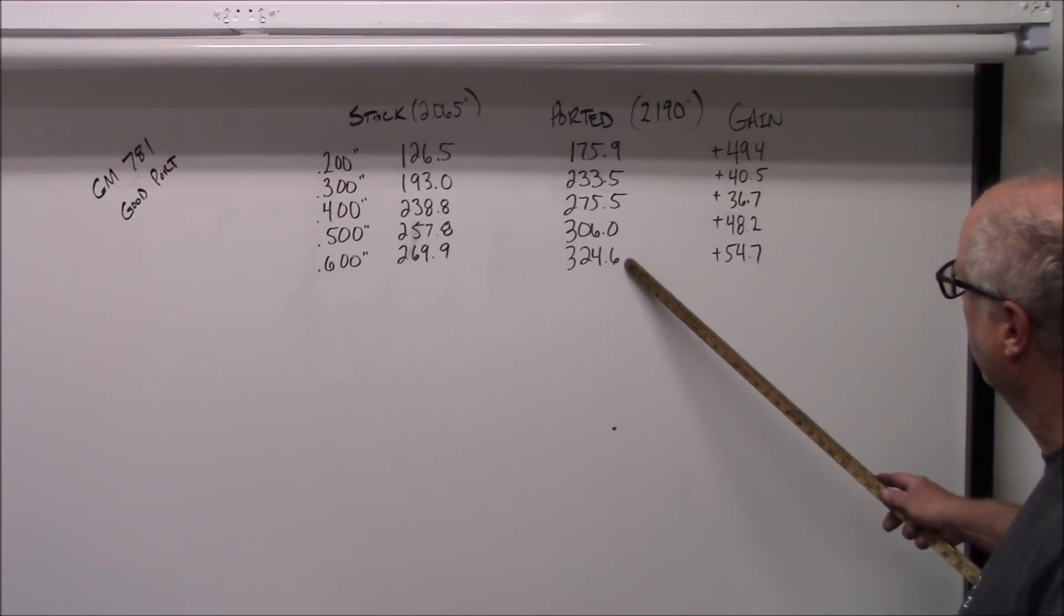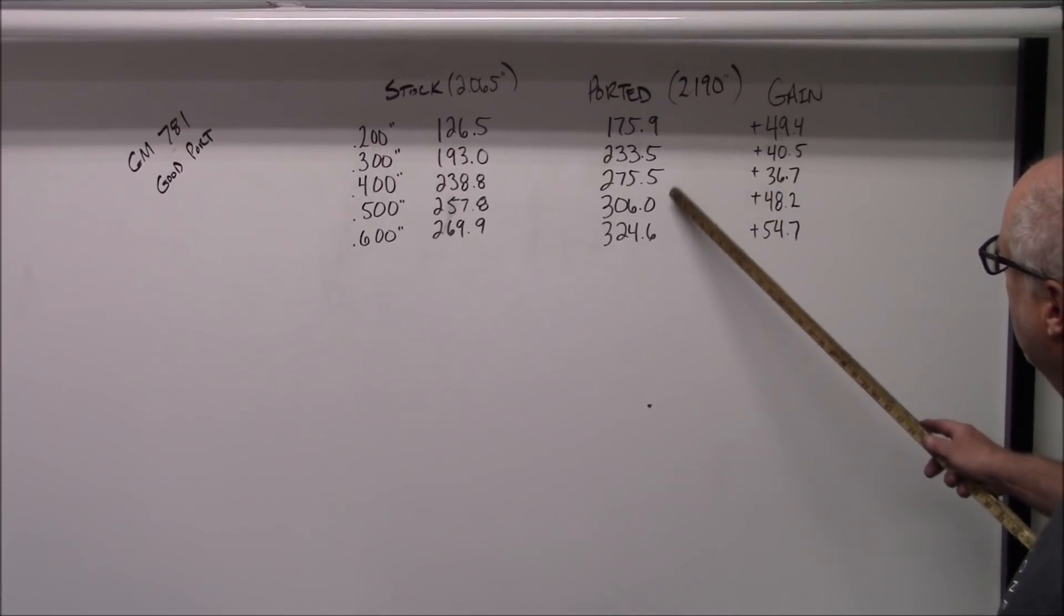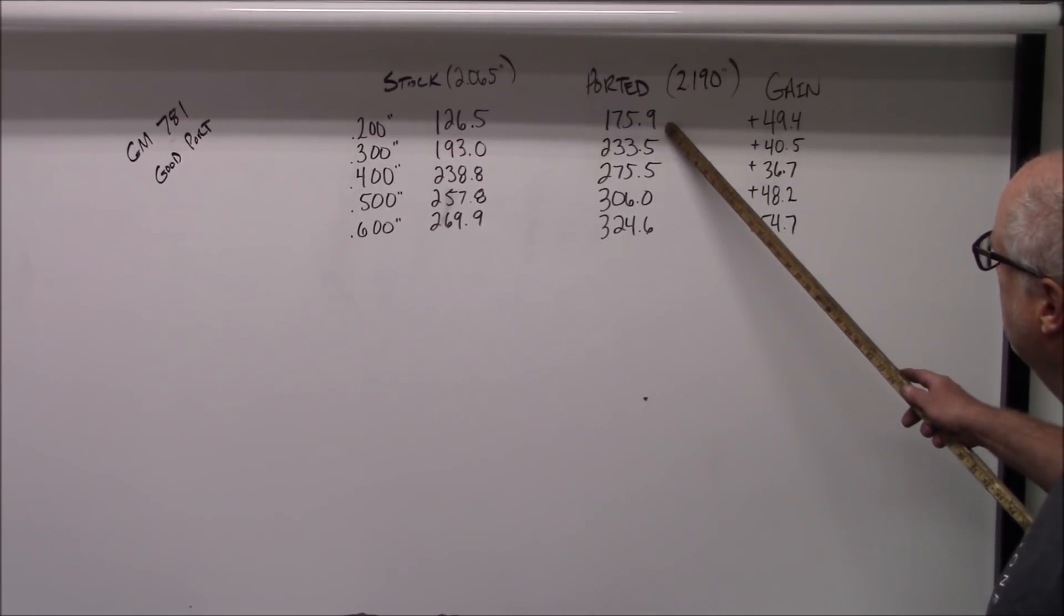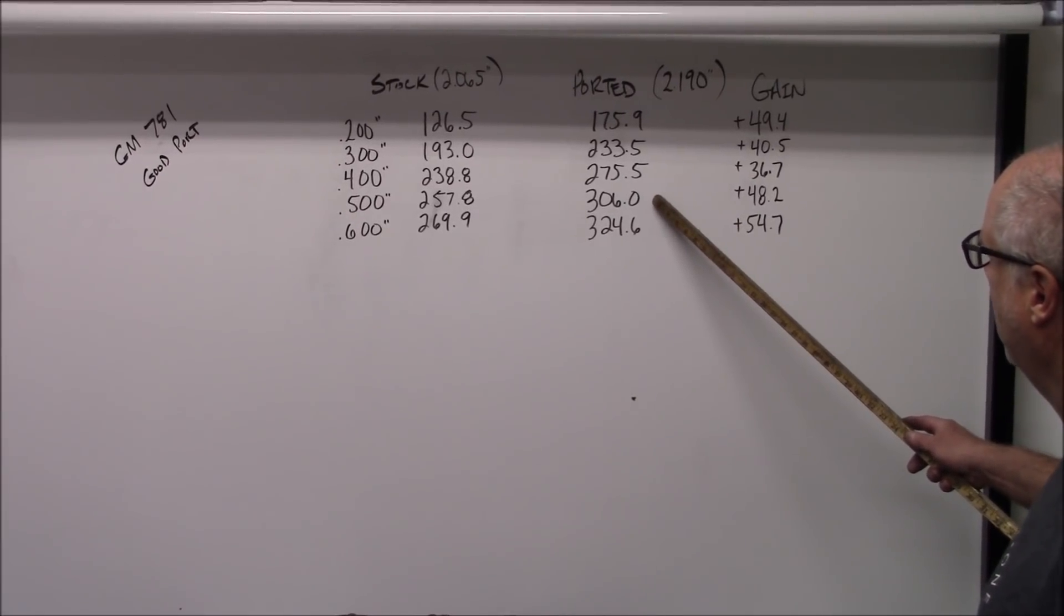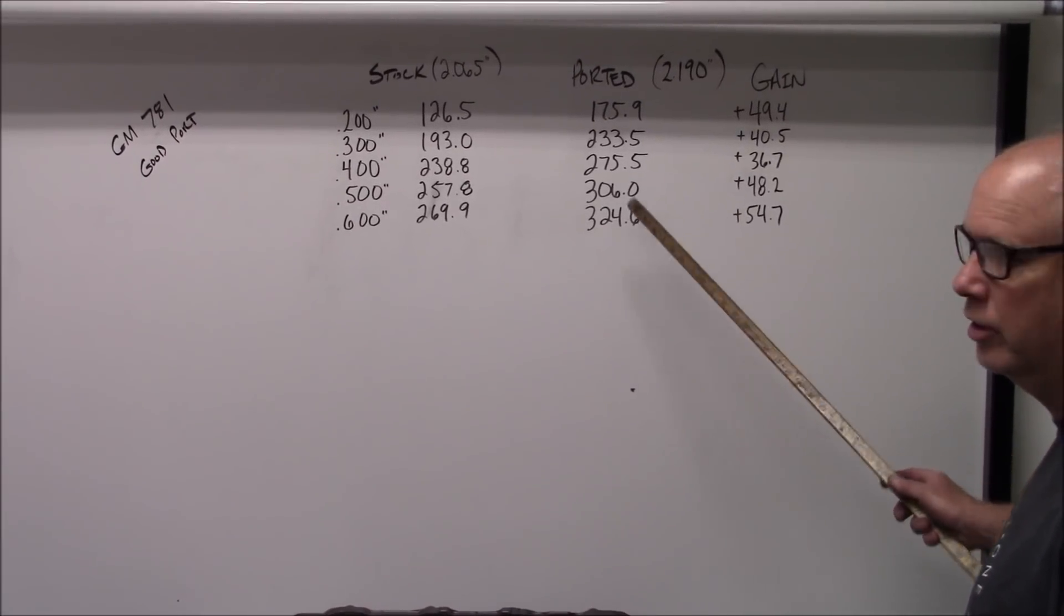Here's our flow numbers on the ported good port. 175 at 2, 233 at 3, 275 at 4, 306 at 5, and 324 at 600 lift.